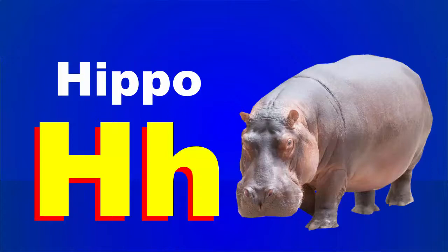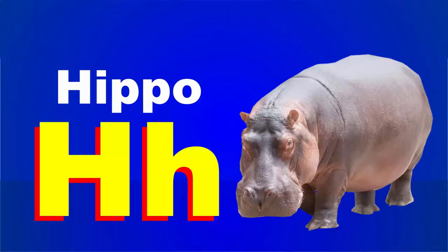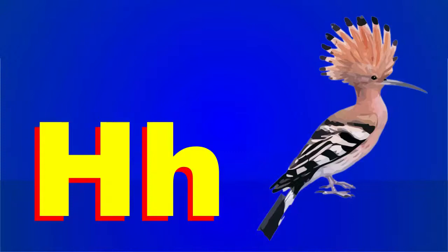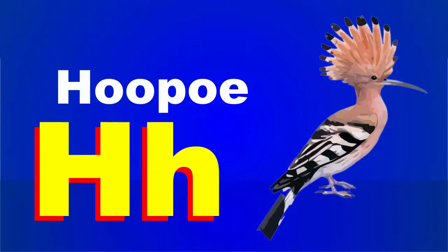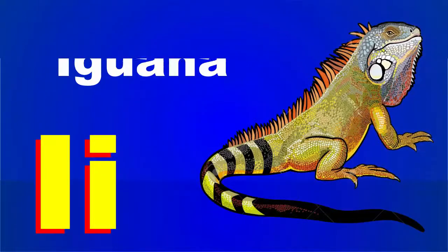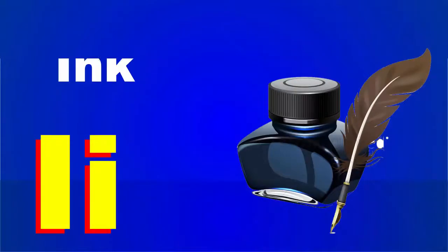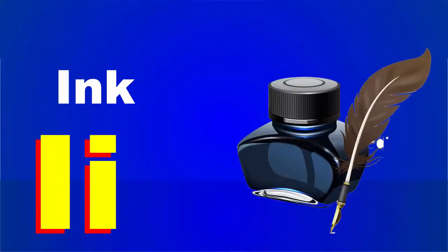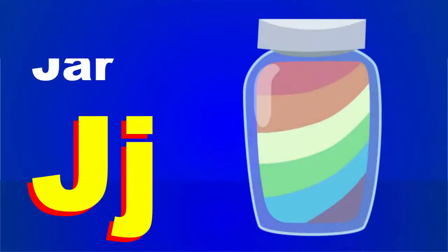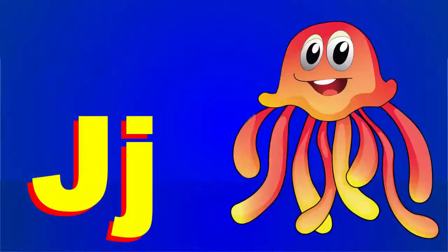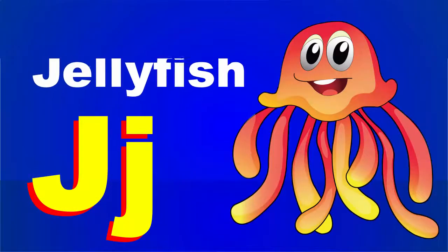H is for hippo. H is for hoopoe. I is for iguana. I is for ink. J is for jar. J is for jellyfish.